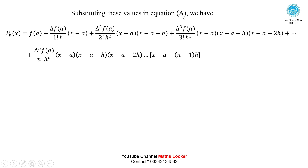Substituting all these values back into equation (A), we get: Pn(x) = f(a) + [delta f(a)/(1!·h)]·(x−a) + [delta²f(a)/(2!·h²)]·(x−a)(x−a−h) + [delta³f(a)/(3!·h³)]·(x−a)(x−a−h)(x−a−2h) + ... + [delta^n f(a)/(n!·h^n)]·(x−a)(x−a−h)...(x−a−(n−1)h).